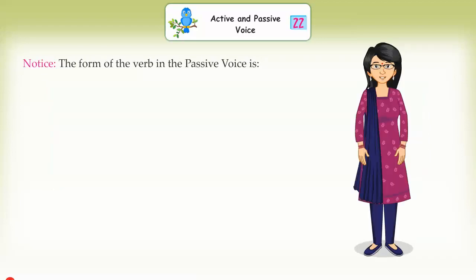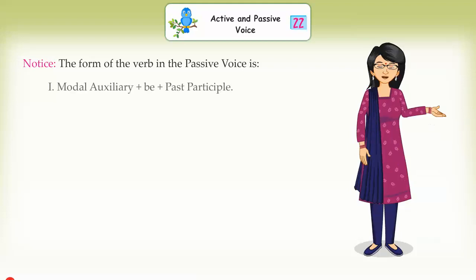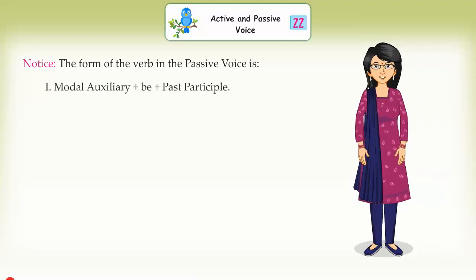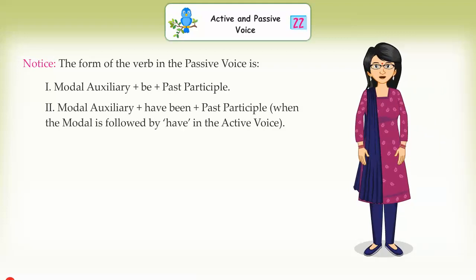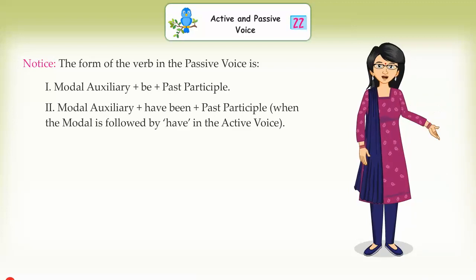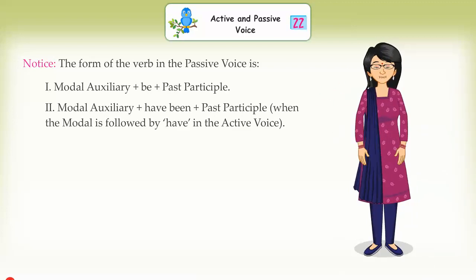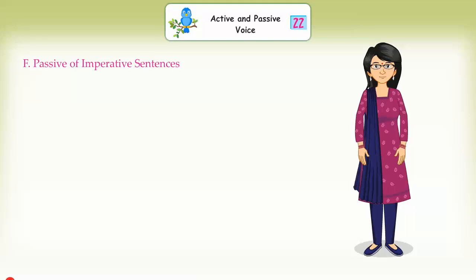Notice: the form of the verb in the passive voice is modal auxiliary + be + past participle, or modal auxiliary + have been + past participle when the modal is followed by 'have' in the active voice.